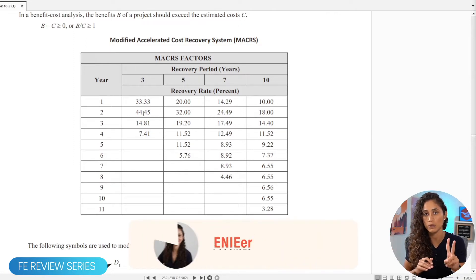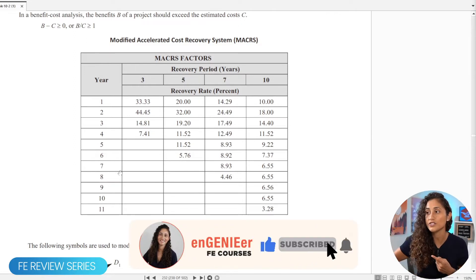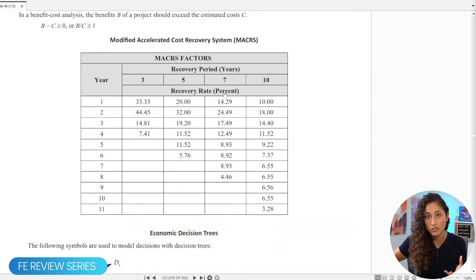Now, when you are using this table, there are two things that you guys need to keep in mind. One is that all these numbers here are actually in percentage. So when you plug them in the equation, you've got to make sure that you divide by a hundred so that you can get rid of the percentage. So that's the first thing. The second thing is you've got to make sure that you add the factor values.